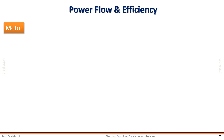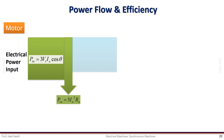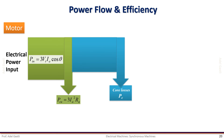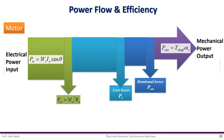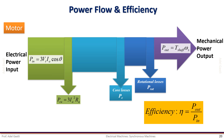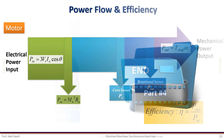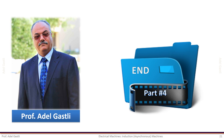Moving to the motor operation, the input power in this case is electrical. Part of this power is dissipated as heat due to core loss. Then the remaining power is converted into mechanical power through electromechanical energy conversion. However, part of this developed power compensates for the rotational losses. The remaining power is the mechanical output power on the shaft of the machine, developed for a mechanical load. Finally, the efficiency is the ratio of the output mechanical power over the input electrical power. This is the end of this part. Thank you for watching this video.